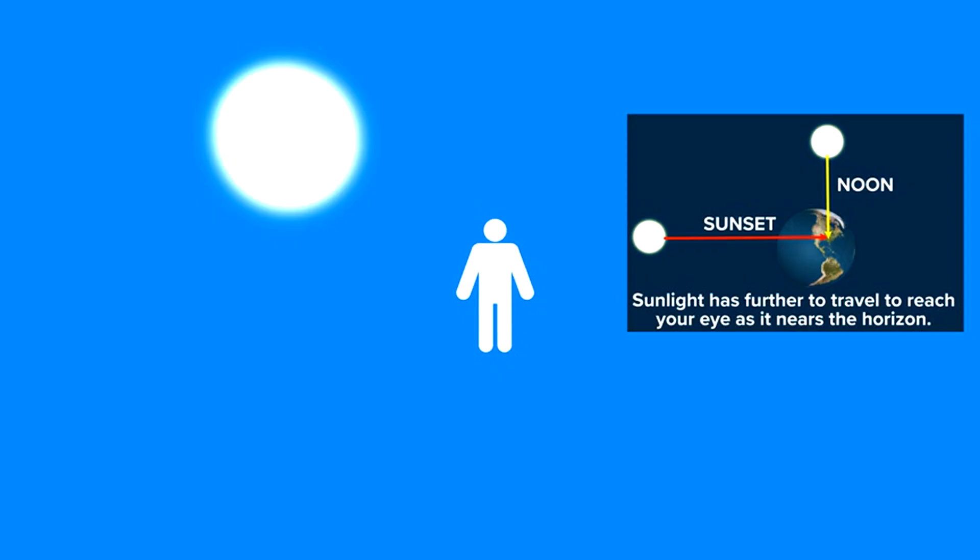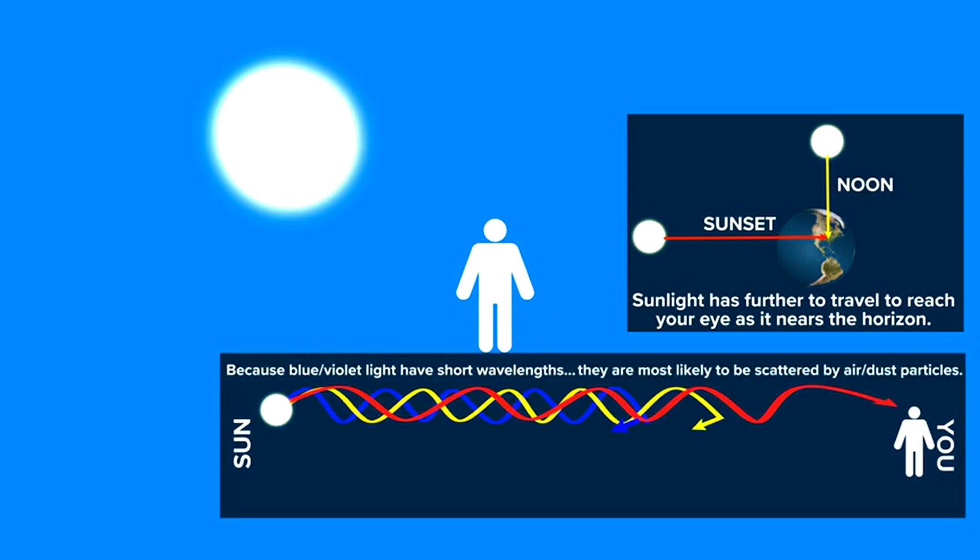It also has to do with how far that sunlight has to travel through the atmosphere before it finally reaches your eyes. Of course, when the sun or moon are directly overhead, that light comes directly down to us. But when the sun gets lower on the horizon, there's more atmosphere that the light has to pass through.